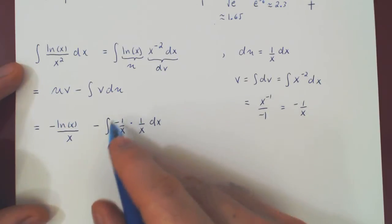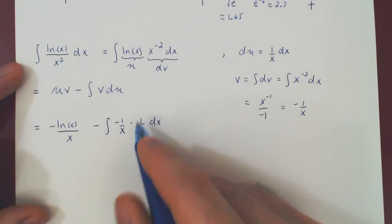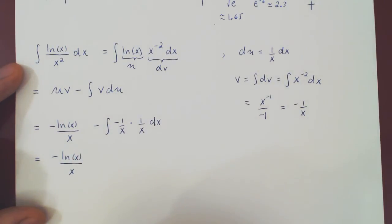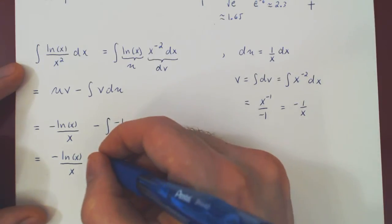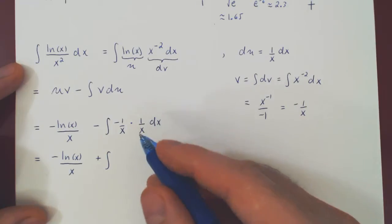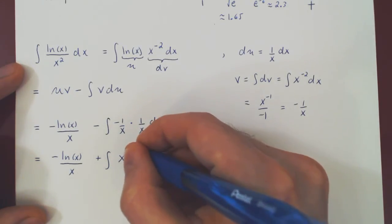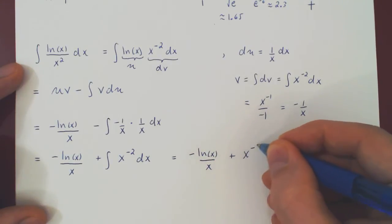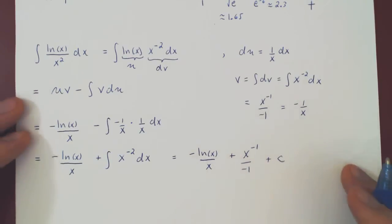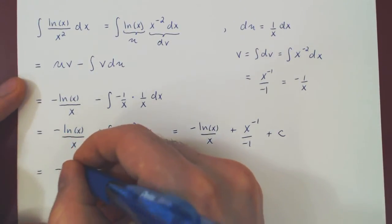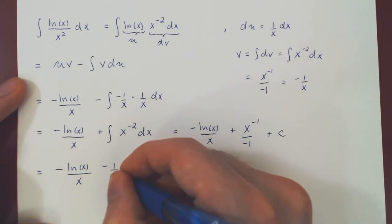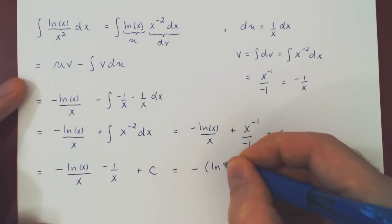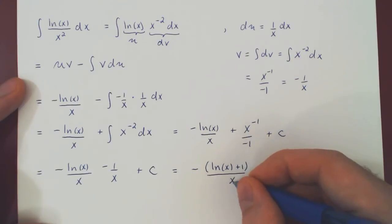Now we can see we'll have a much simpler integral than the original one, as the ln of x has disappeared. We can simplify here, negative negative is positive. Instead of writing 1 over x squared, thinking again of the power rule, I will write x to the negative 2. I can now use the power rule. x to the minus 1 over negative 1 plus c. I will of course simplify here. I can combine this over a single fraction. This is negative the ln of x plus 1 over x plus c.